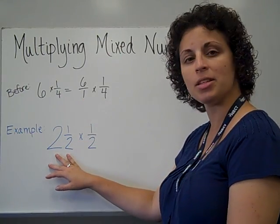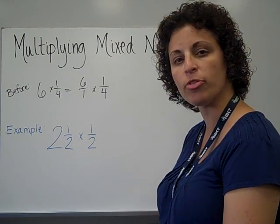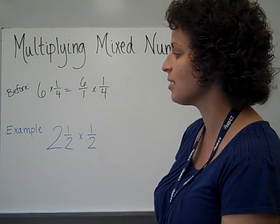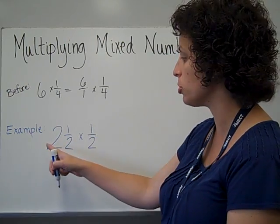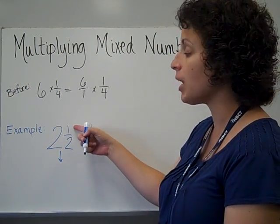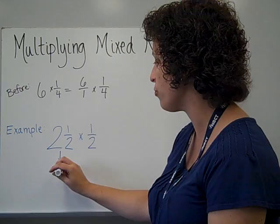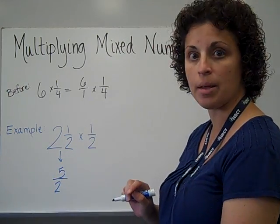Can we turn this mixed number into an improper fraction? The answer is yes. To do that, we multiply the whole number times the denominator. So 2 times 2 is 4, plus the numerator, which gives me 5, and the denominator stays the same.